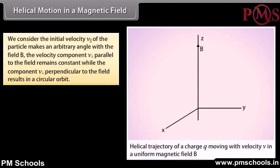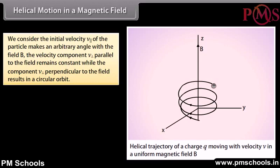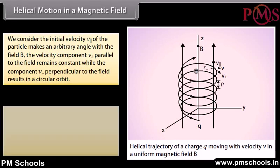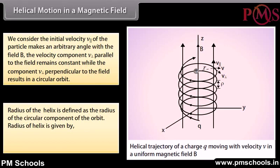Helical motion in a magnetic field: When the initial velocity V of the particle makes an arbitrary angle with field B, the velocity component parallel to the field remains constant while the perpendicular component results in a circular orbit. The radius of the helix is the radius of the circular component: r = mV⊥ / QB.